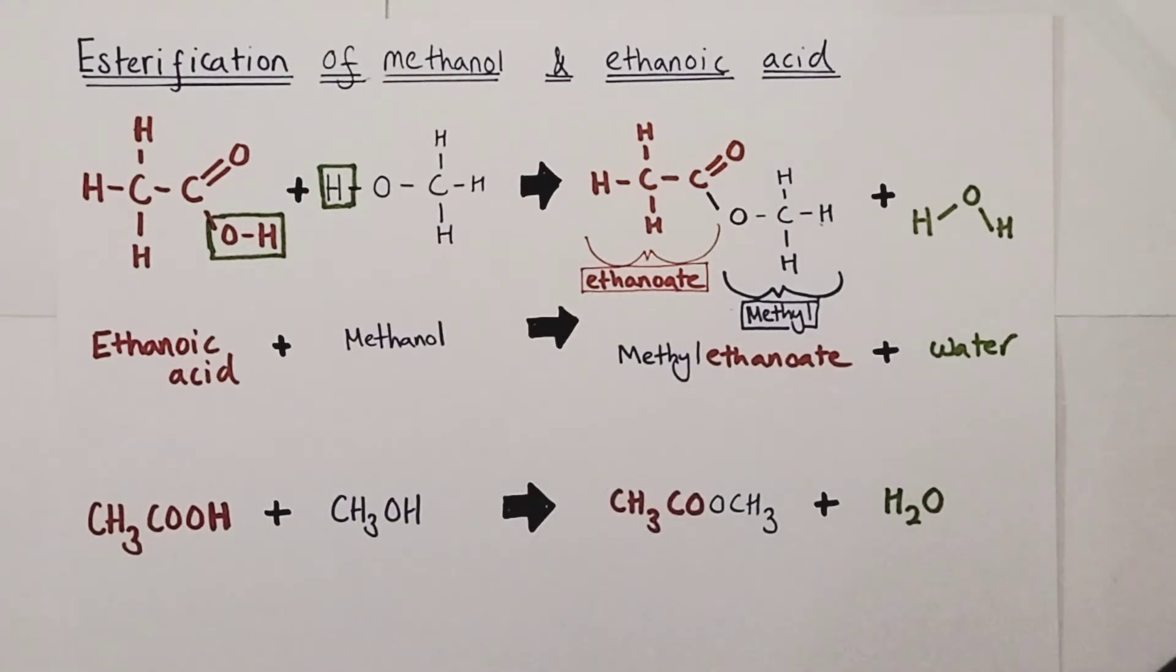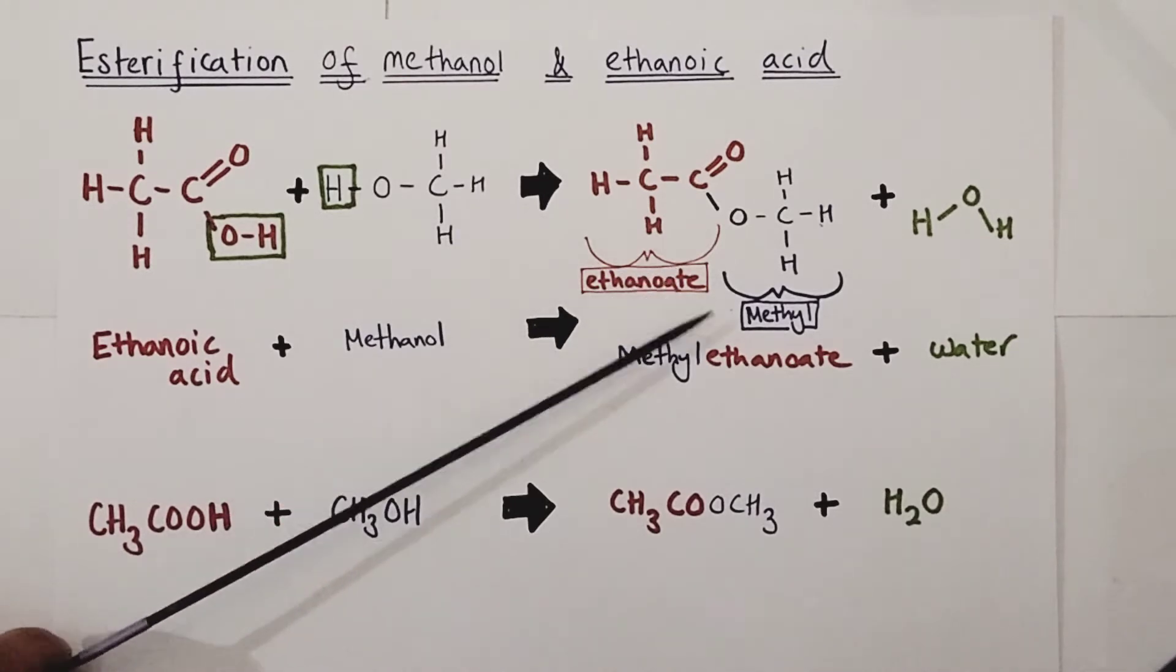This type of reaction is known as a condensation reaction because it involves the elimination of a small molecule, in this case water. Now that was a very simplified explanation for GCSE level which in no way talks about the actual mechanism of this reaction which is more complicated. This is just a simple way of looking at esterification to help us understand how to properly draw correctly the structure of the ester formed in these sorts of reactions.